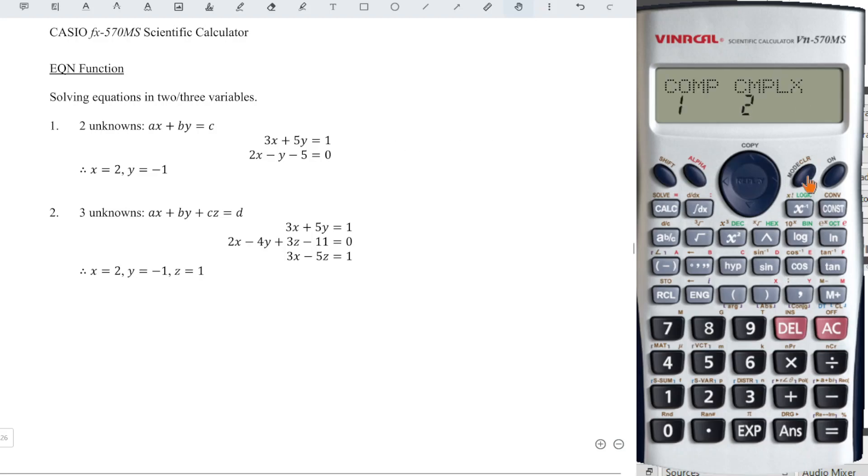First, we press mode three times until we see EQ as the equation function number one. And we just have to select how many unknowns we have accordingly. So if let's say we have only x and y, which means that it's two unknowns, then we choose two.